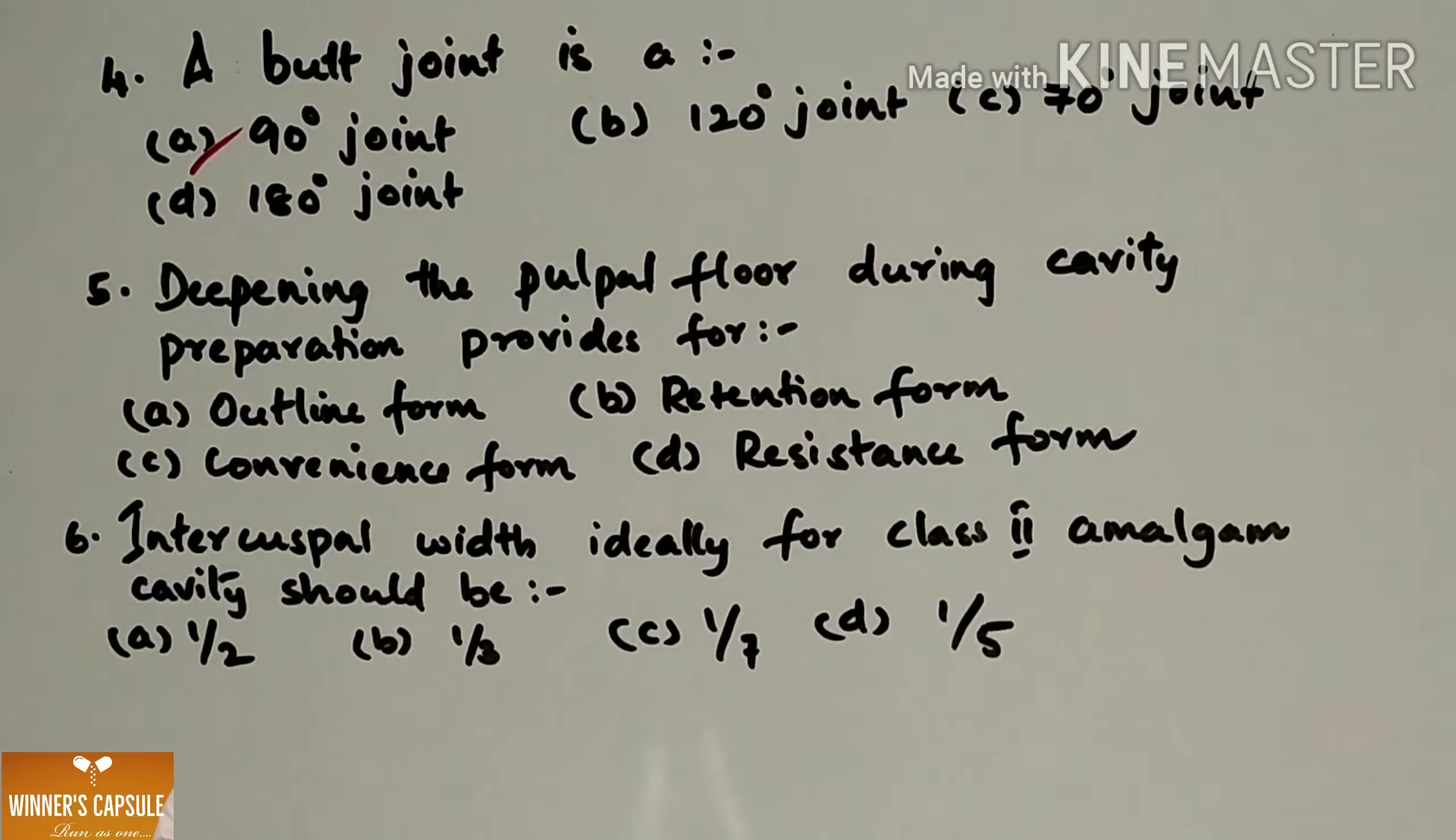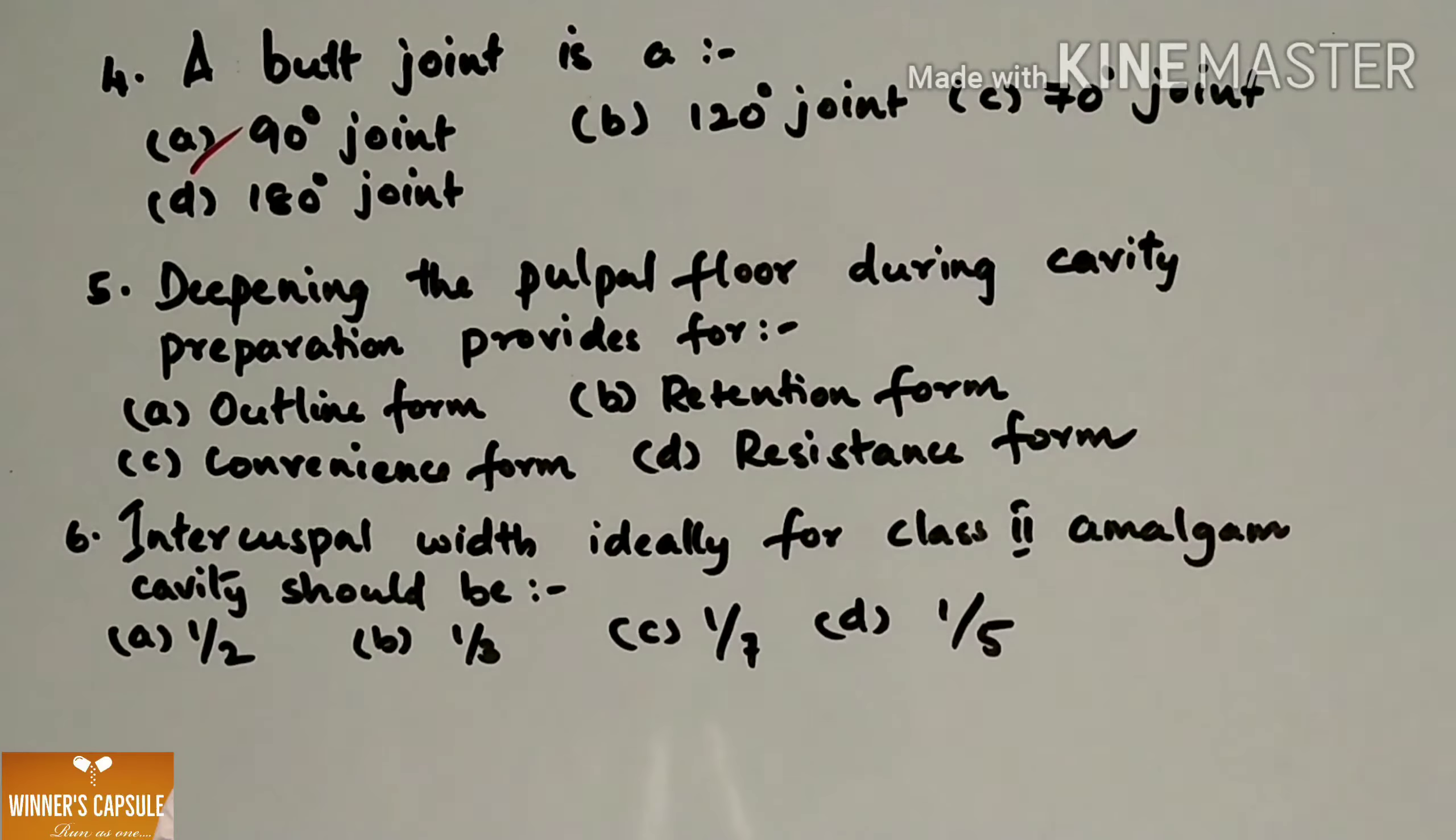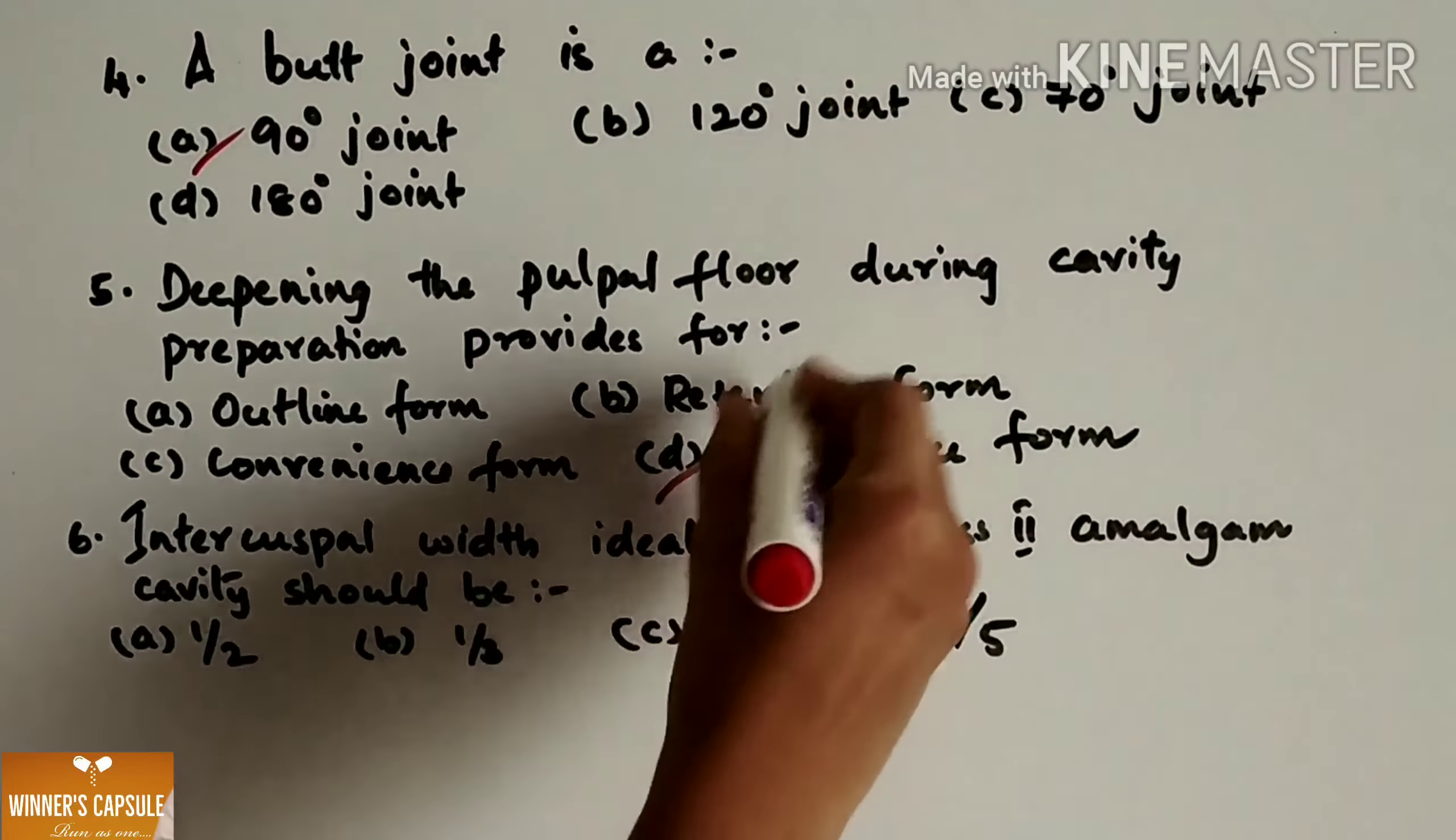Next question: Deepening the pulpal floor during cavity preparation provides for (a) Outline form (b) Retention form (c) Convenience form and (d) Resistance form. Answer is option D, resistance form.